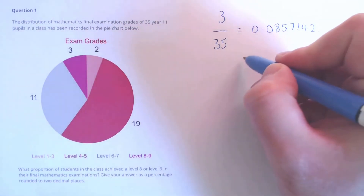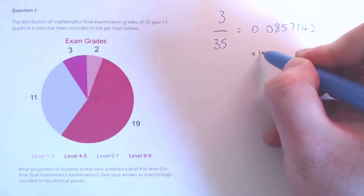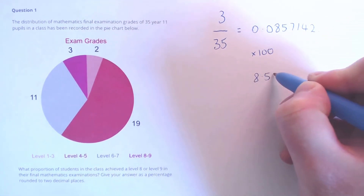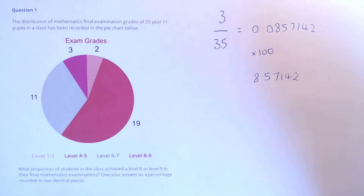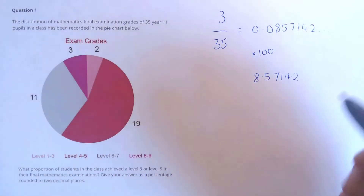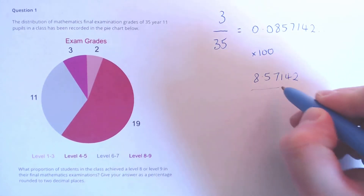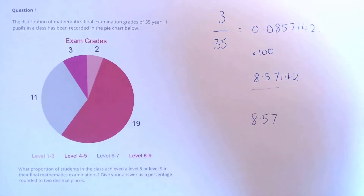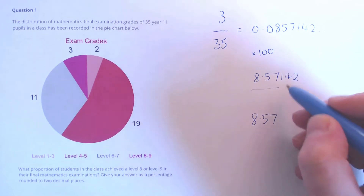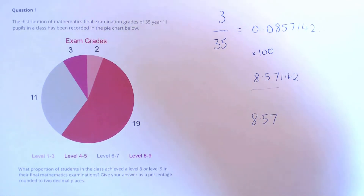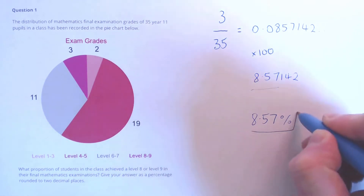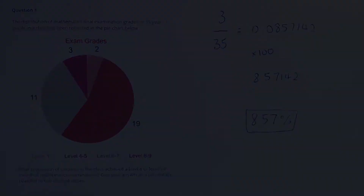We need that as a percentage, so to do that we need to multiply by 100. That's 8.57142. The question asks for two decimal places, so we will round that to 8.57, rounding down because this digit is lower than 5. So our answer is 8.57%.